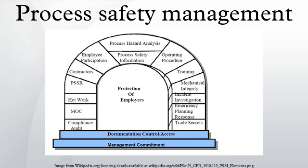Process safety management is an analytical tool focused on preventing releases of any substance defined as a highly hazardous chemical by the EPA or OSHA. It refers to a set of interrelated approaches to manage hazards associated with the process industries, and is intended to reduce the frequency and severity of incidents resulting from releases of chemicals and other energy sources.